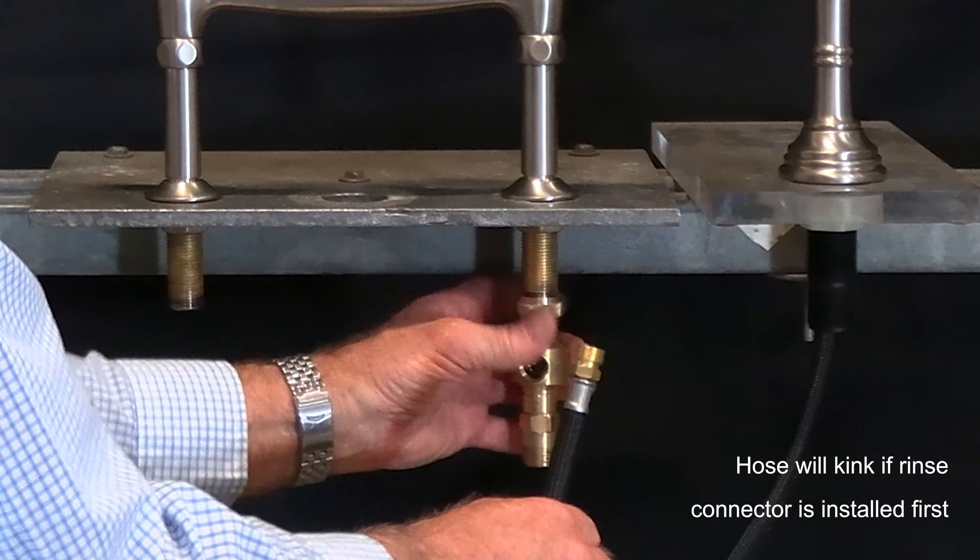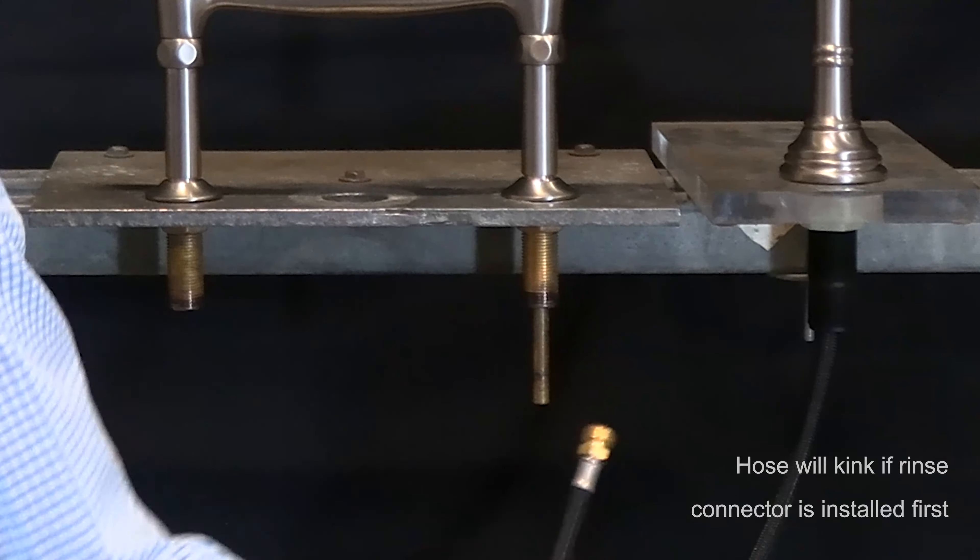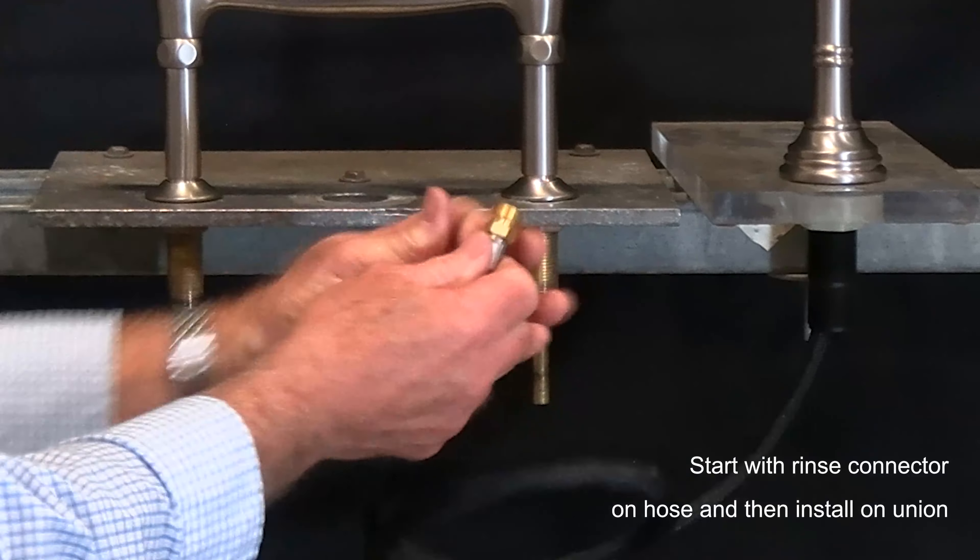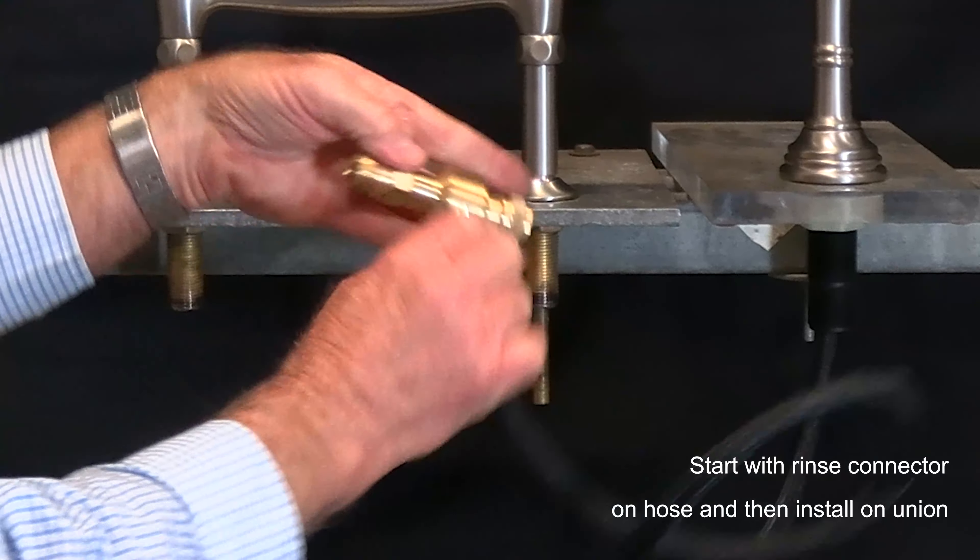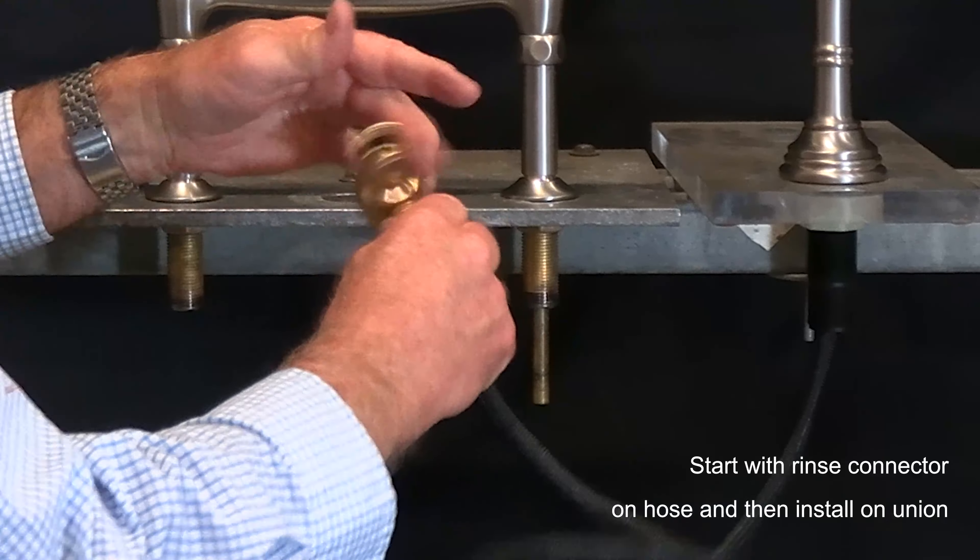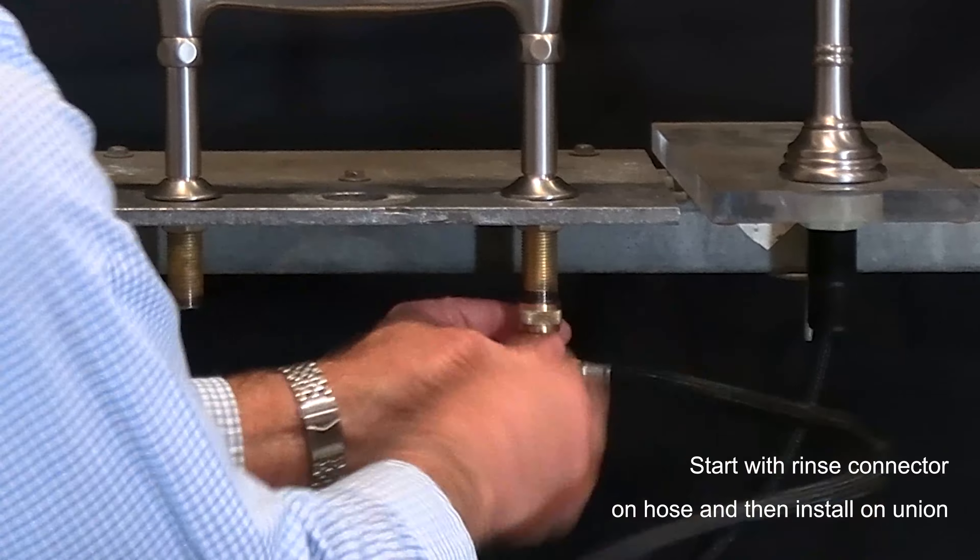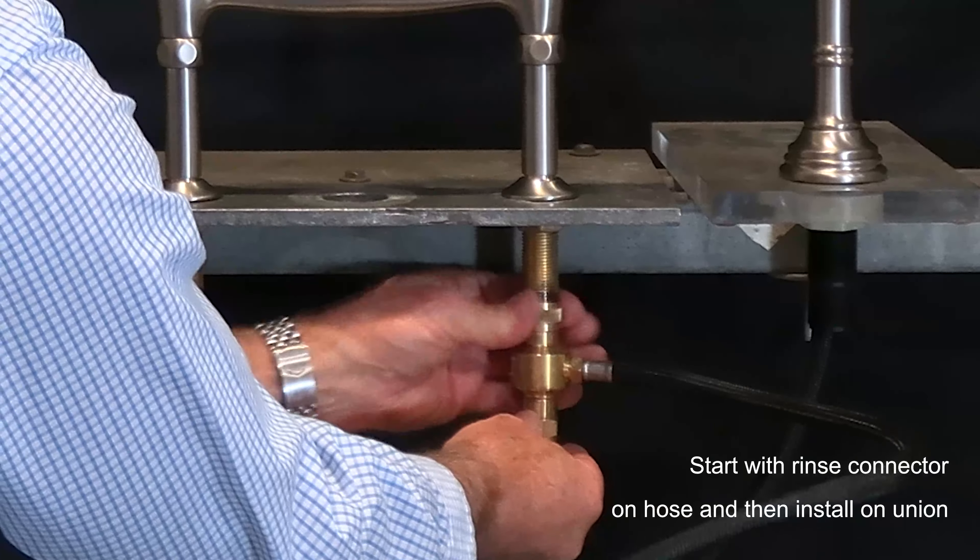So the correct way to install this piece is actually to spin the rinse connector onto the hose before you install it onto the cold side connection.